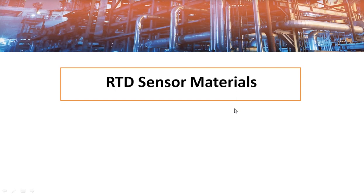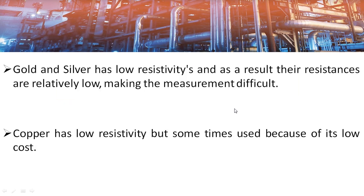The widely used metals for RTDs are platinum, nickel, and copper. There are other metals but they are not used because of their limitations. Gold and silver have low resistivity, meaning their change in resistance per unit temperature variation is low, making measurement difficult, and because of that these metals are not used for RTDs.